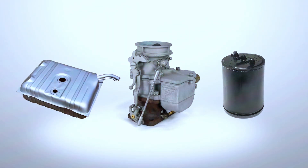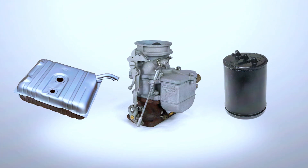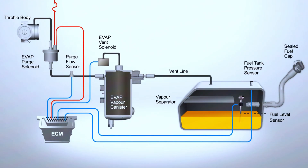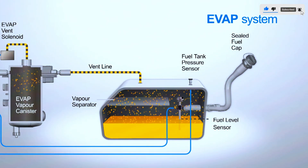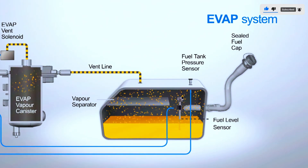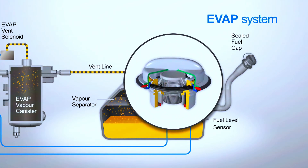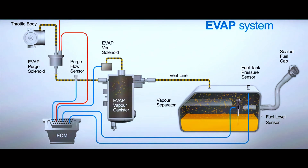First things first, what exactly is an evap leak? The evap, or evaporative emission control system, is designed to prevent fuel vapors from escaping into the atmosphere. It captures these vapors and sends them back into the engine to be burned off. An evap leak means there's a hole or crack somewhere in this system, allowing vapors to escape.